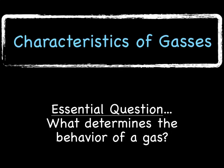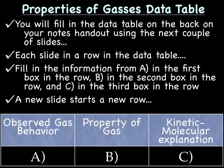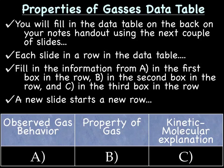Today's essential question: what determines the behavior of a gas? For this lecture, you need to find your data table handout. You're going to fill out that data table going through the lecture. Each slide is a row in the data table. In each slide, you'll have Part A, Part B, or Part C. Part A is for the observed gas behavior, Part B is for the property of the gas, and Part C is for the kinetic molecular explanation. Once we move to a new slide, move to a new row on your data table.